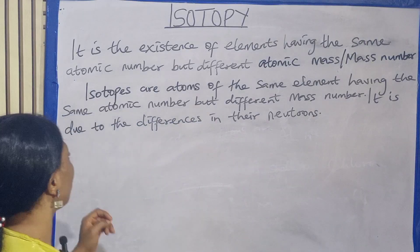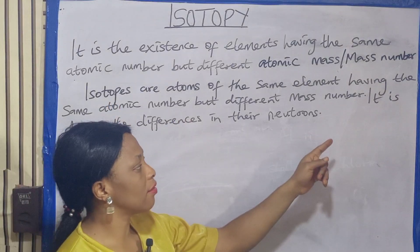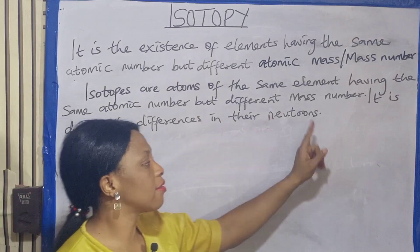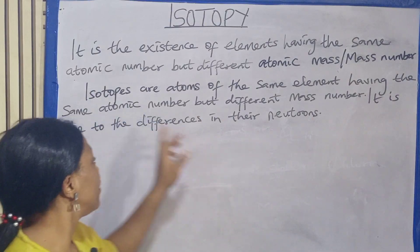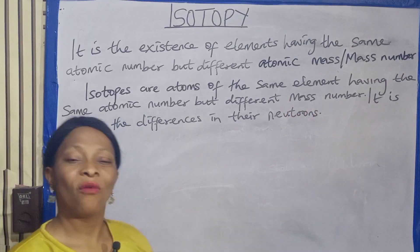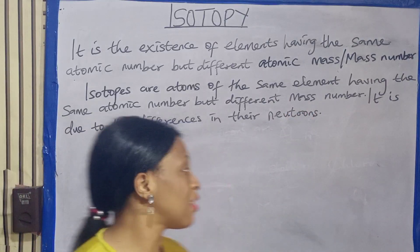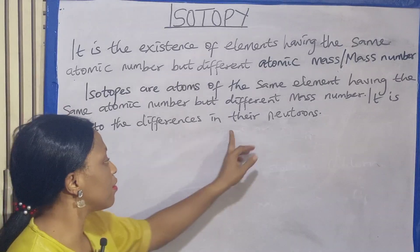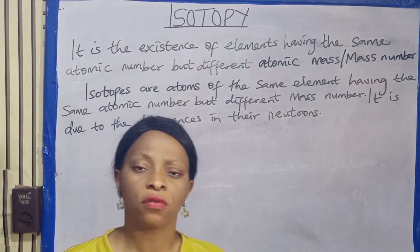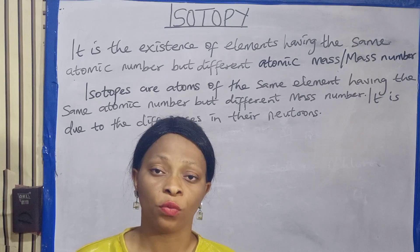So let's look at the second definition. Isotopes are atoms of the same elements having the same atomic number but different mass number. They have the same atomic number but different mass number. Now, why do isotopes exist? Basically, isotopes exist as a result of differences in their neutrons — differences in the number of their neutrons. This is why isotopes exist.